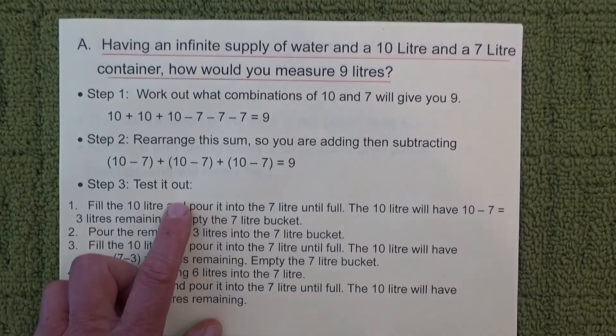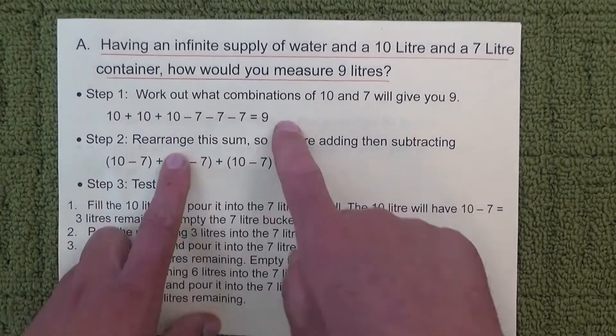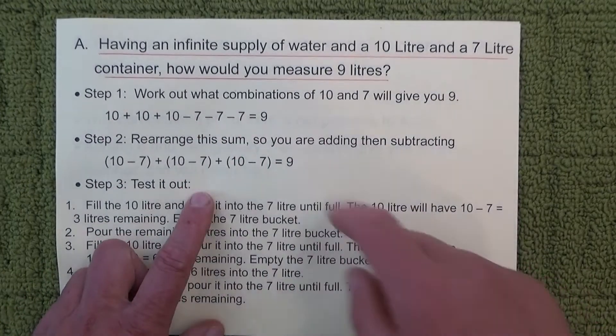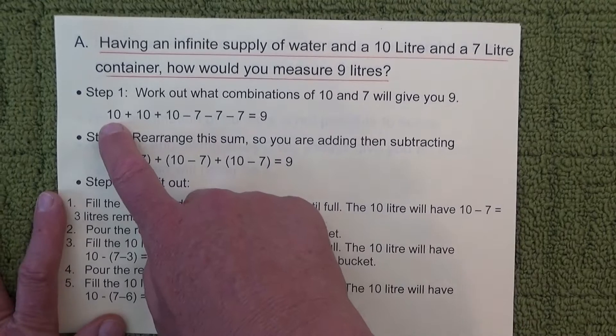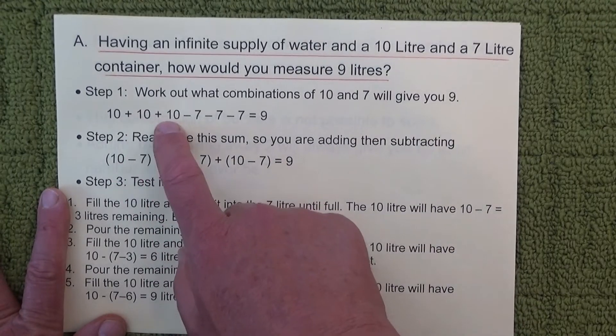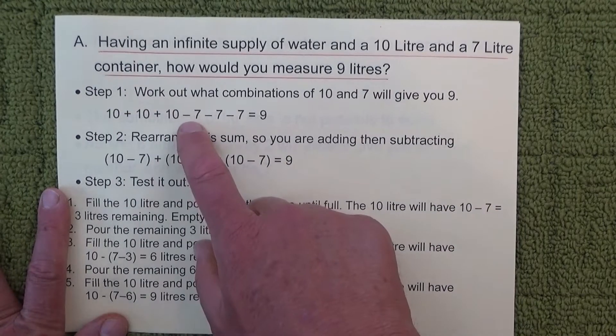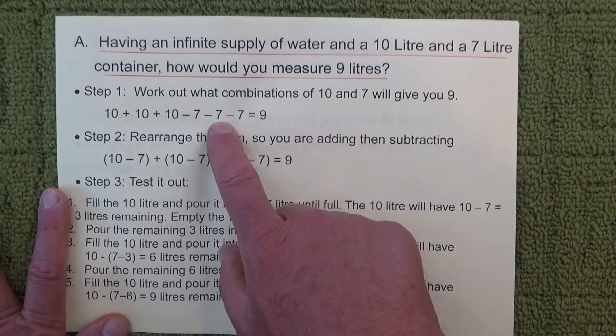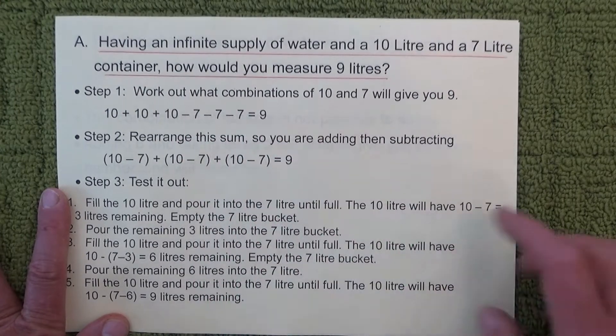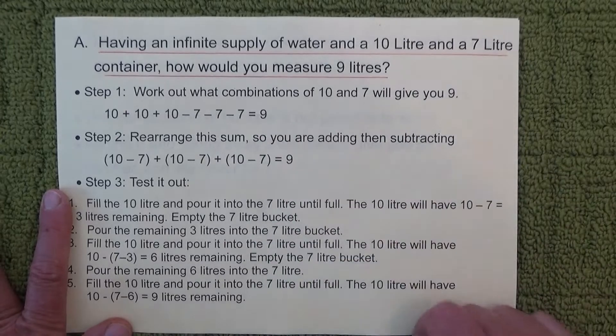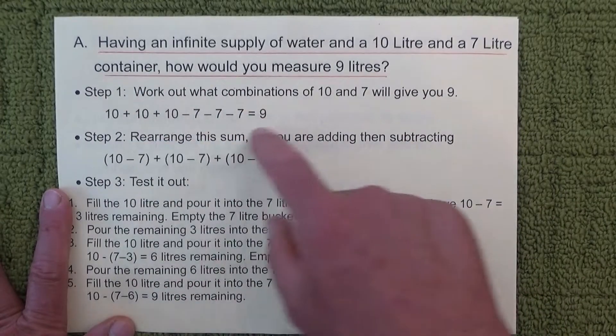So the first step then is to use the tens and the sevens with different adding and subtracting that will give you 9. And you can see there that I've done 10 plus 10 plus 10 which is 30, and then I've taken away 7 and another 7 and a 7, and that gives me 9 as the answer. So that's going to be the basis of our solution.